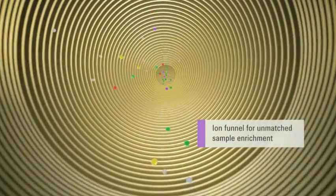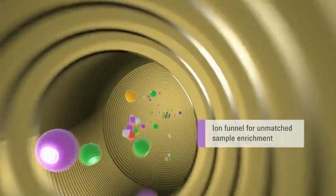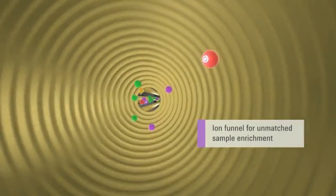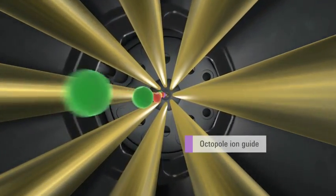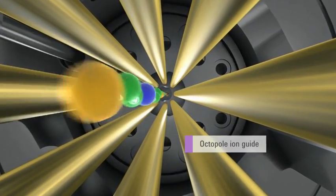The first ion funnel operates at high pressure and propels ions forward. The second stage funnel operates at lower pressure and provides further ion enrichment. An optimized octopole ion guide provides high efficiency ion transmission over a wider mass range.